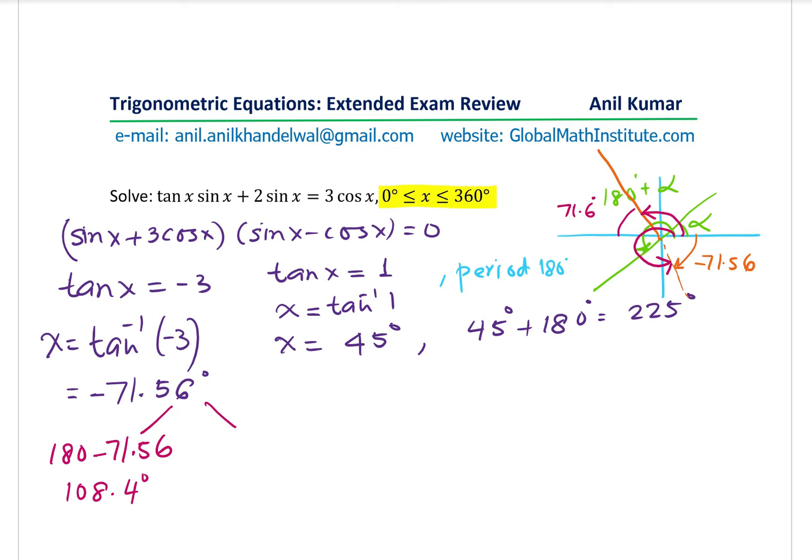The other one is 360 minus 71.56. So the other one is 360 degrees minus 71.56. Is that clear to you? Perfect. So we'll write this as 360 minus 71.56, and what we get here is 288.4.